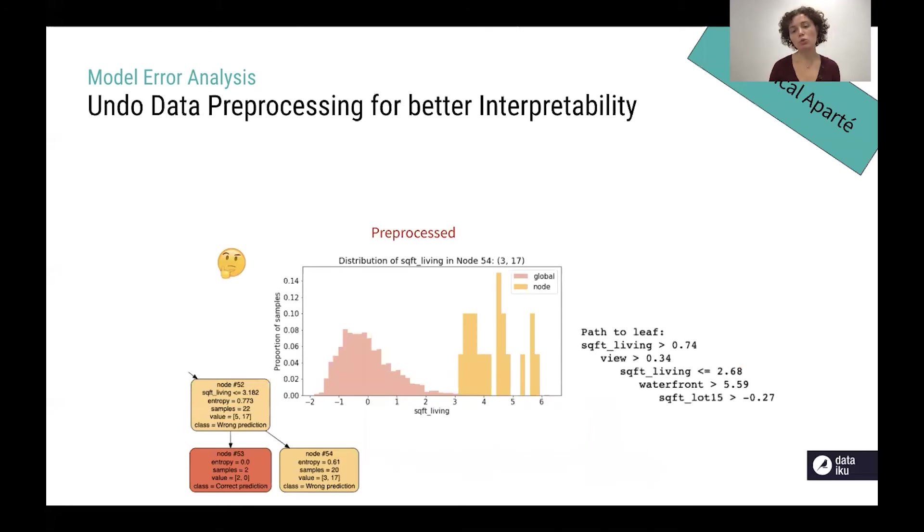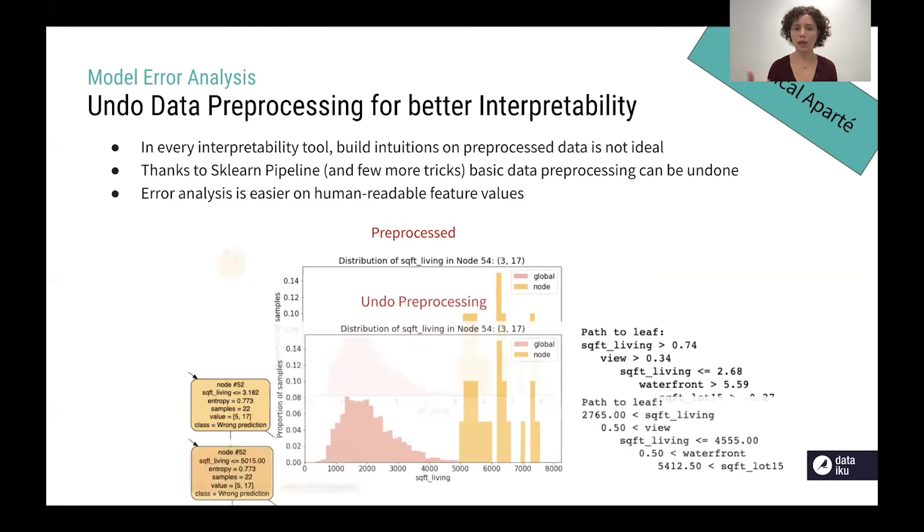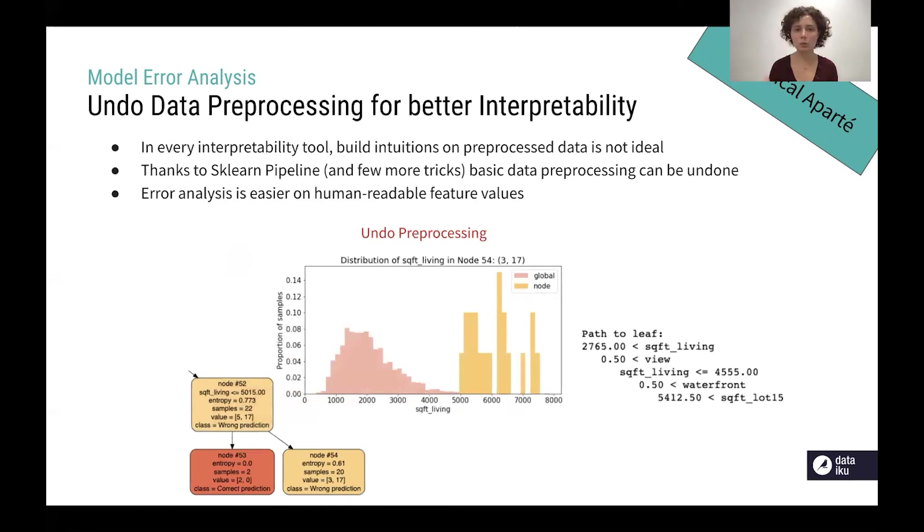We are using models that are trained on pre-processed features and pre-processed features are not good for interpretability and in general model debugging on pre-processed data is not ideal. What we need to do is use some tools, for instance sklearn pipeline, to undo this pre-processing and to visualize the human readable feature values. This allows to have a clear explanation of what's going on. For instance in this same illustration about the surface of the living rooms we have negative numbers so it could be even a little bit misleading and we can be puzzled by this visualization. Instead if we can undo the pre-processing we will have a clear human readable value.